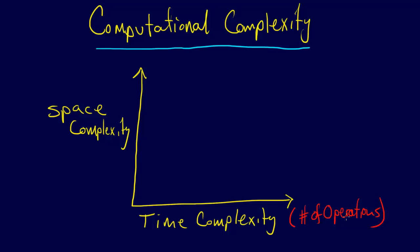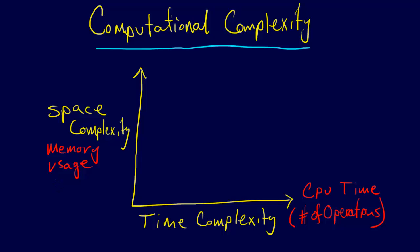Another thing we should think about in terms of complexity is CPU time. Space complexity, on the other hand, refers to memory usage — you should basically think of that as RAM.